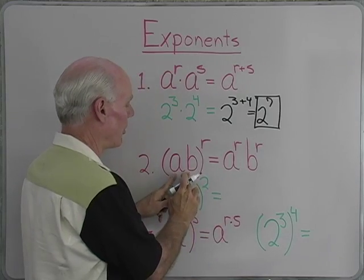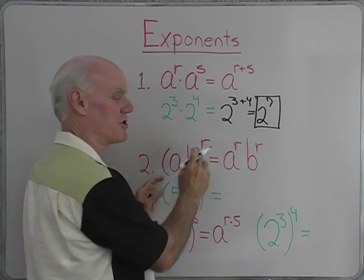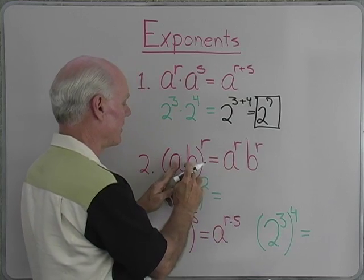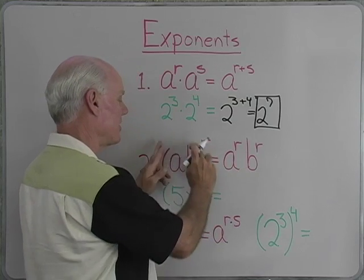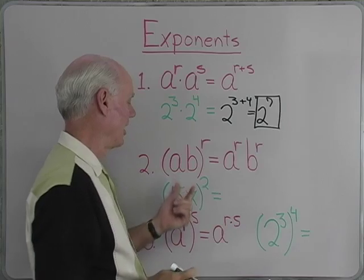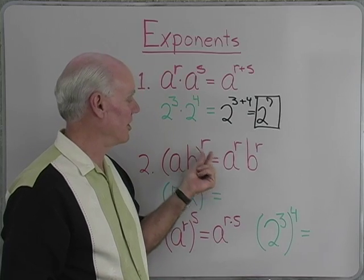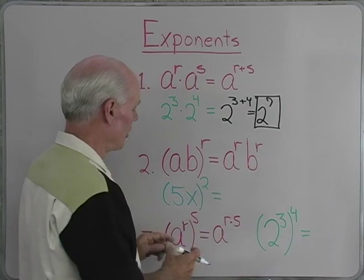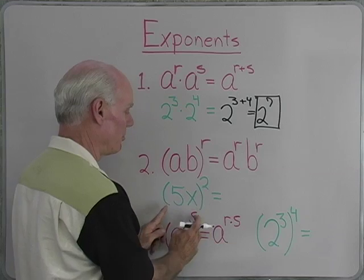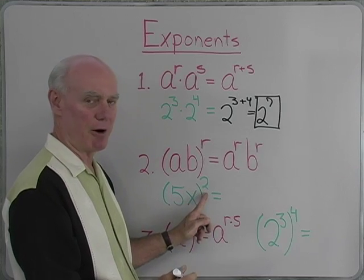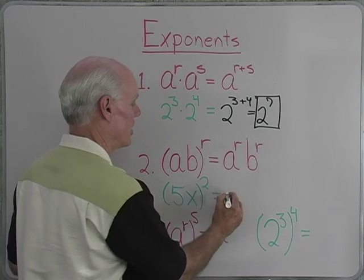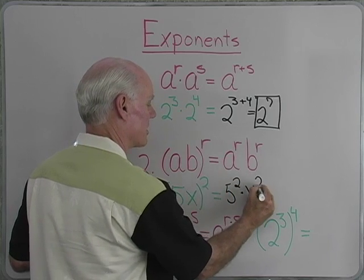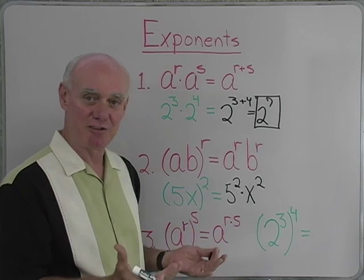Now here I have a product all in parentheses raised to the r power. That means that each of the two factors inside the parentheses can be raised to the r. a times b raised to the r is the same as a to the r times b to the r. So if I have 5x in parentheses raised to the 2nd power, I can change that to 5 to the 2nd power times x to the 2nd power, if it's convenient.